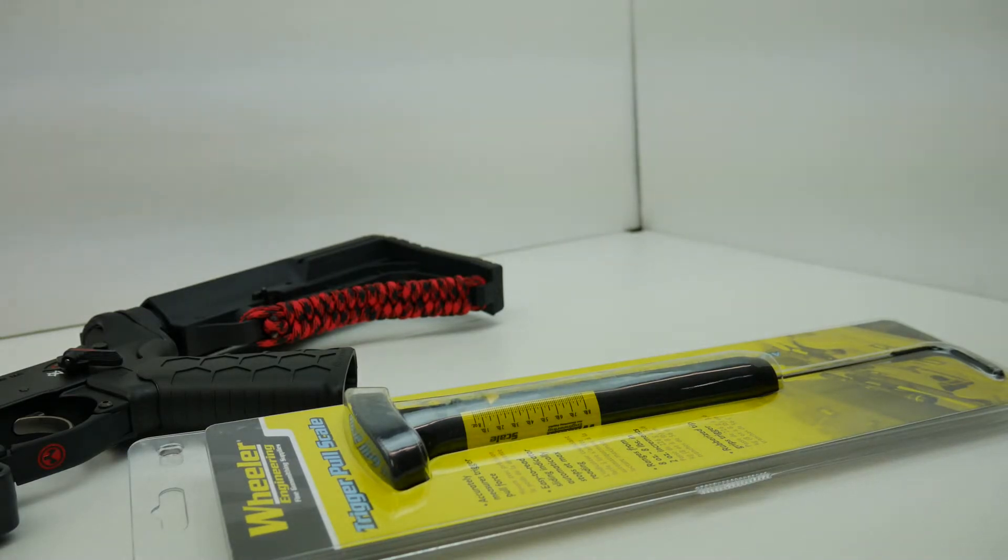In this tabletop review we're going to be taking a look at a product made by Wheeler. This is their trigger pull scale. It basically measures how much pull weight you have on a trigger, whether it be a pistol or a rifle.